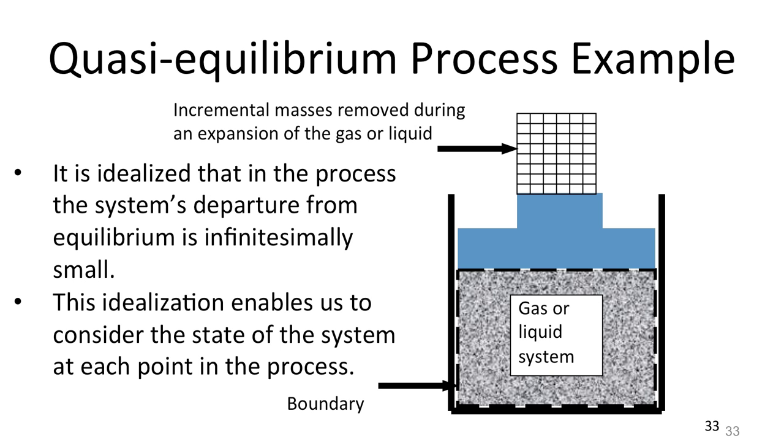You can idealize the process so that the change of the state of the system is very slow. At every step in this change, the system is very close to being in equilibrium, even though it's not exactly in equilibrium when the process is going on.